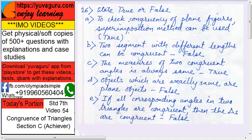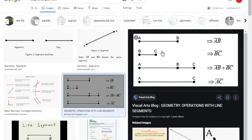Next, two segments with different lengths can be congruent. That is false. See this, AB and BC, these are two segments. Are they congruent? Different lengths, not congruent.